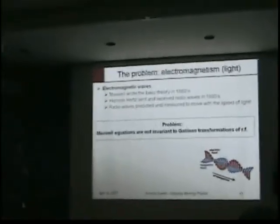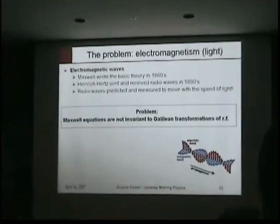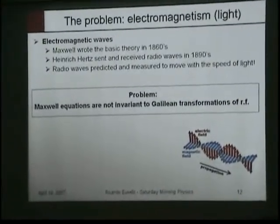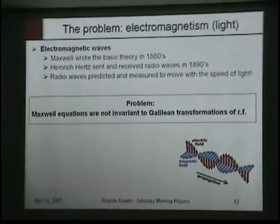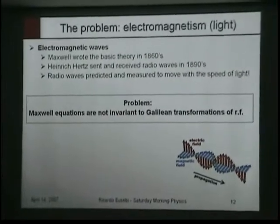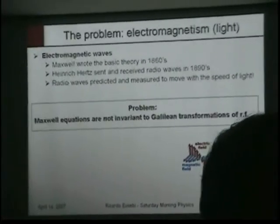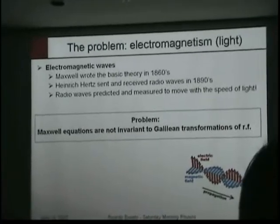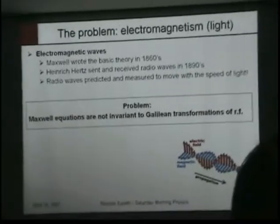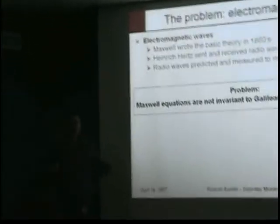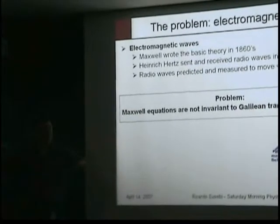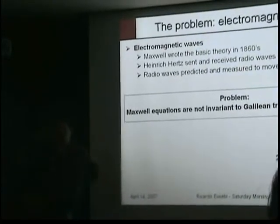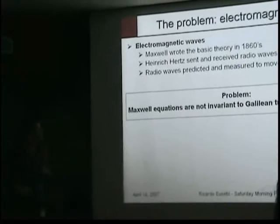The problem is that Maxwell's equations are wave equations, and these are not invariant under Galilean transformations. If you have light and you apply Galilean transformations, you don't see it as a wave in another reference frame. That's a problem, because according to the principle of relativity, you should be able to see all the same physics in any reference frame.